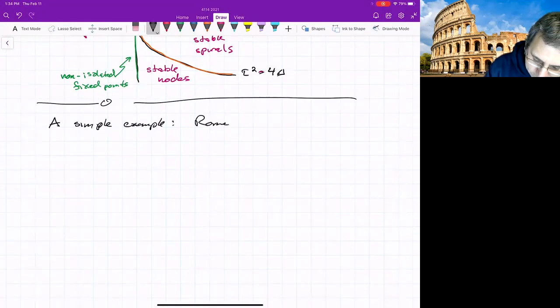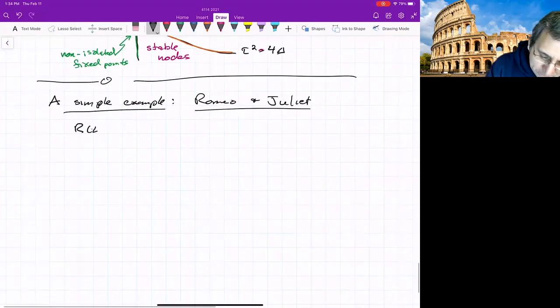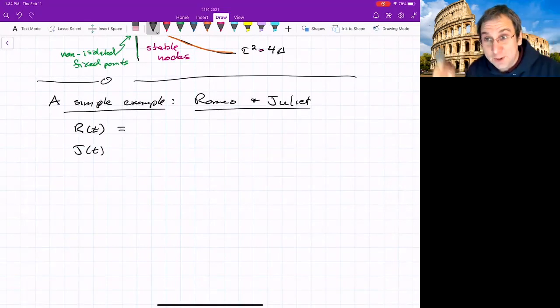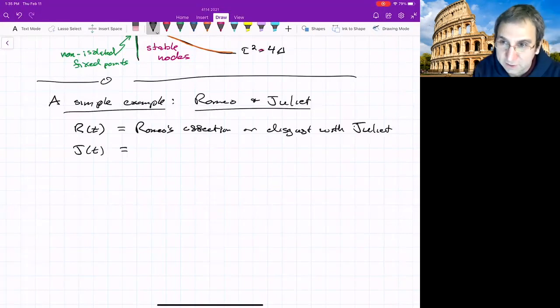A simple model, love affairs, Romeo and Juliet. The two variables of our phase space will be R of T and J of T. R is going to be Romeo's affection or disgust with Juliet. So that's like how he feels about the thing.